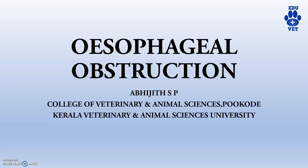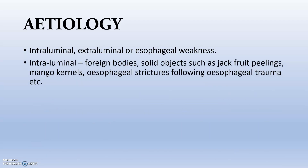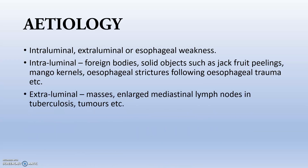The next topic is esophageal obstruction. The etiology is classified as intraluminal, extraluminal, or due to esophageal wall weakness. Intraluminal obstruction is mainly caused by foreign bodies or solid objects such as jackfruit, mango kernels, or esophageal strictures following trauma. Extraluminal obstruction is mainly caused by masses, enlarged mediastinal lymph nodes — as in tuberculosis — or tumors.